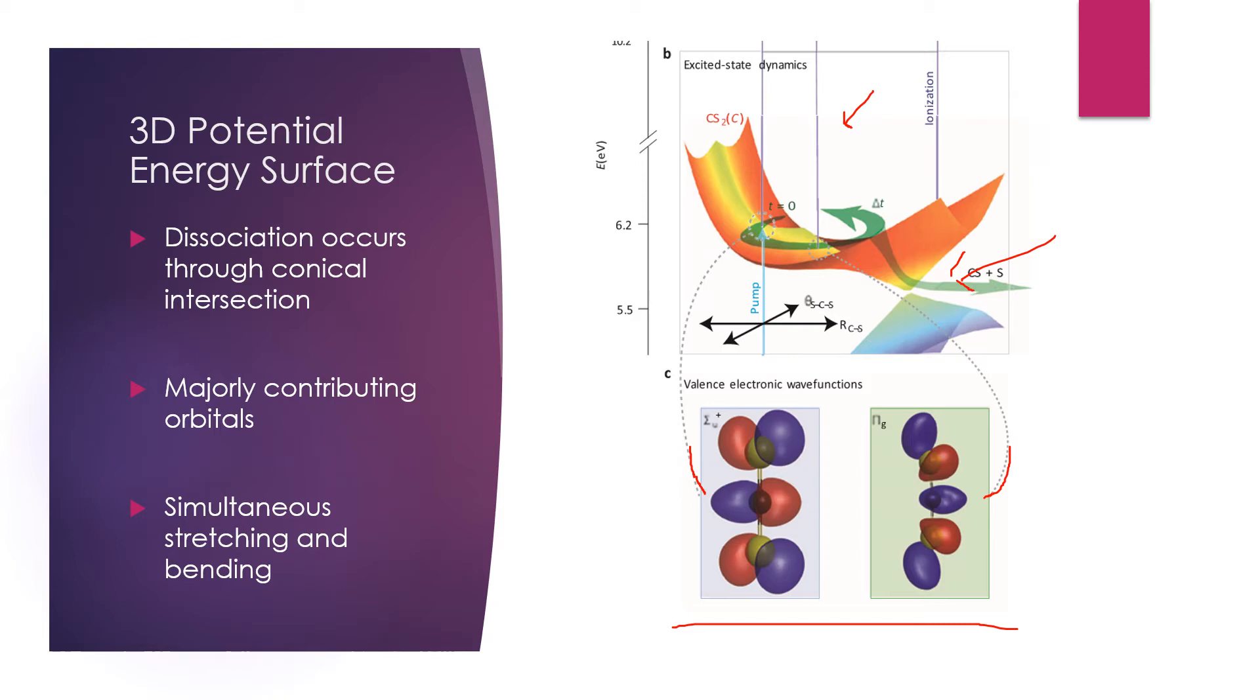Finally, we can take a look at the axes of this potential energy surface. Horizontally is the stretch of the carbon-sulfur bond and vertically is the bend of the polyatomic molecule. As the wave packet develops along this path, we can see that it is simultaneously bending and stretching in these directions.